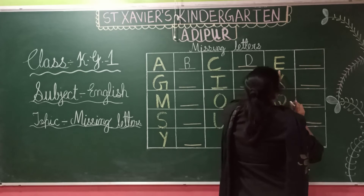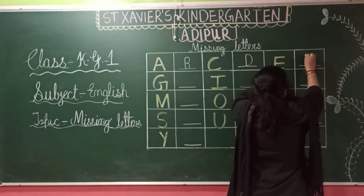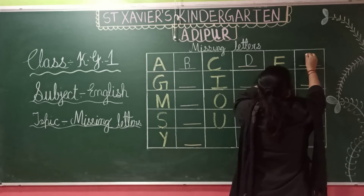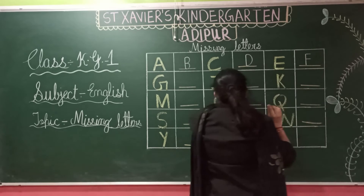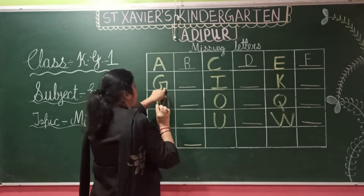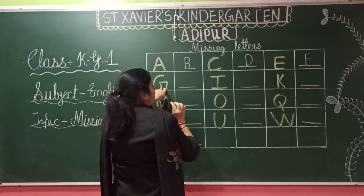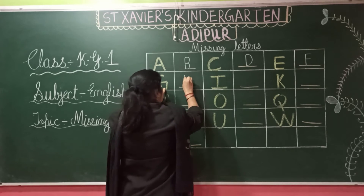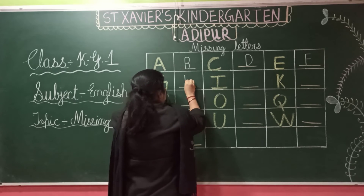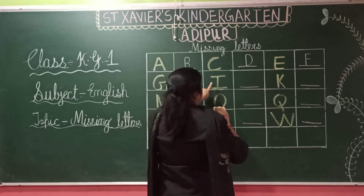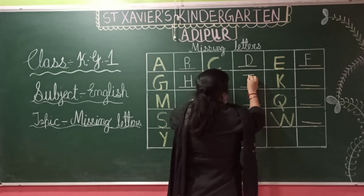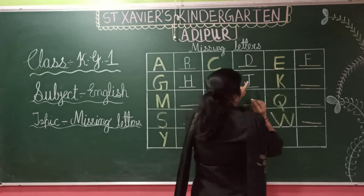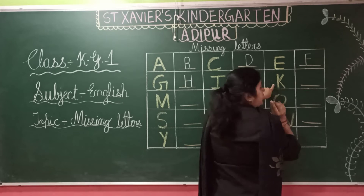E ke baad? E. E ke baad kya aata hai? F. Then E ke baad? G likha wa hai. What comes after G? H. I. I ke baad? J. Okay?